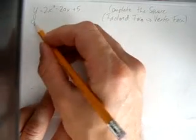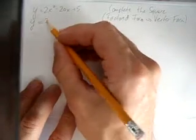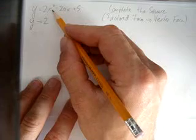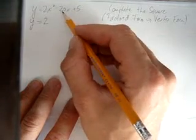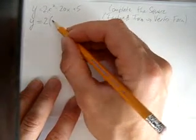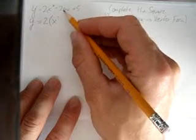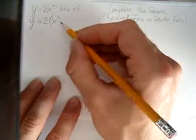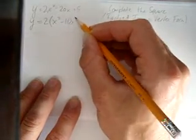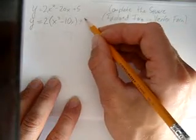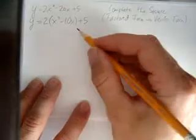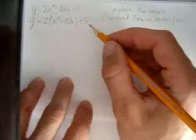The first thing we want to do is factor out the coefficient of the x squared from both the first and second terms only. So factoring a 2 out of 2x squared leaves x squared, and negative 20x divided by 2 leaves negative 10x. Only the first two terms get factored. The last term is just left at the end.